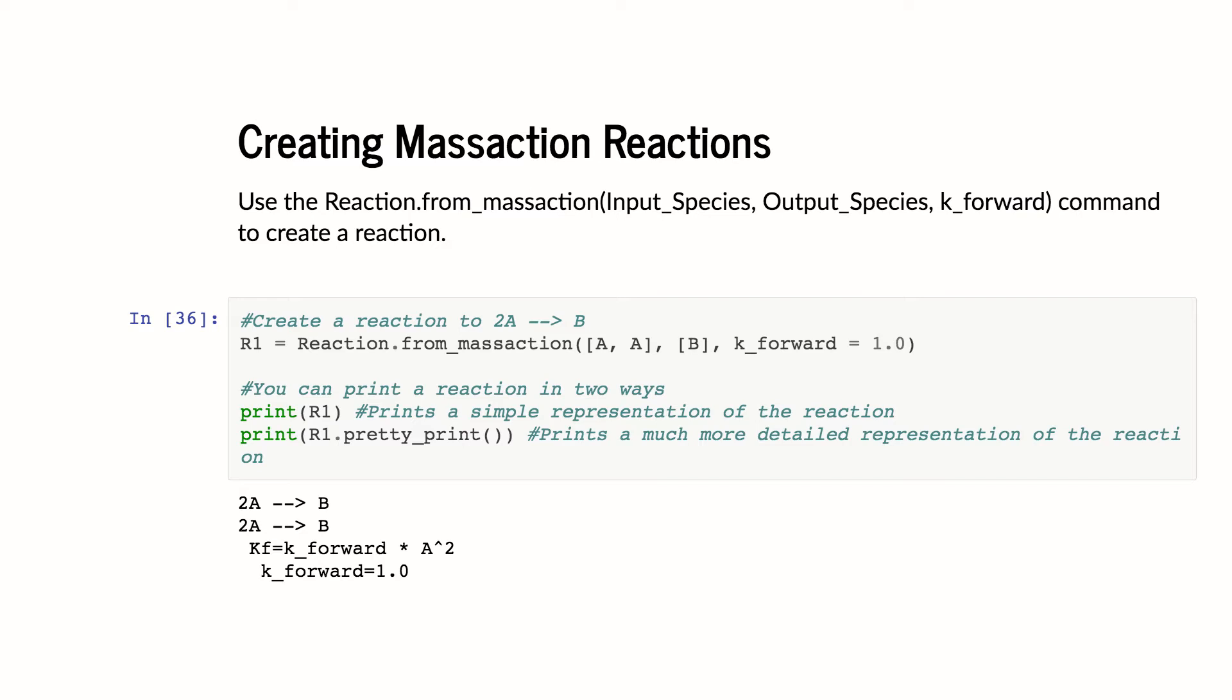And so this is, as we've mentioned, mass action reactions have this propensity function, which has one parameter, which is the rate. I can print it in the simple way where I just sort of see the reaction, but don't see a lot of details about it. Or I can use this pretty print functionality, which shows me what the rate looks like and what my parameters are.